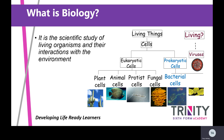Living things are made up of cells. There are two different types: eukaryotic and prokaryotic cells. There are also viruses, but we don't include those as living because they don't respire. Eukaryotic cells are split into plants, animals, protists, and fungi. Prokaryotic cells are bacterial cells.